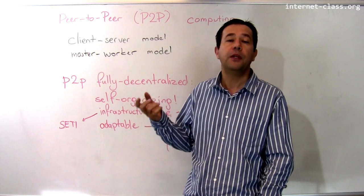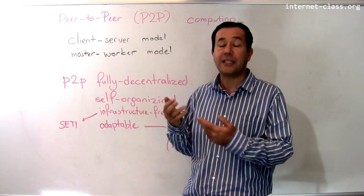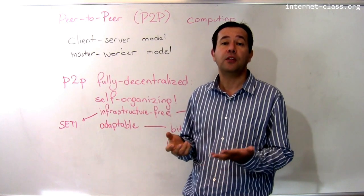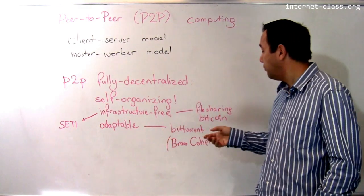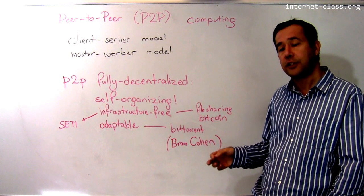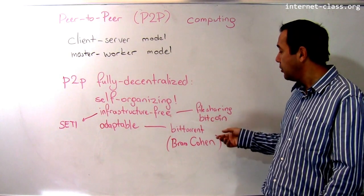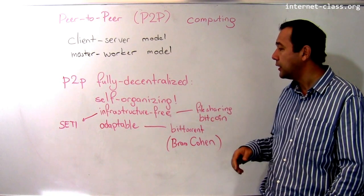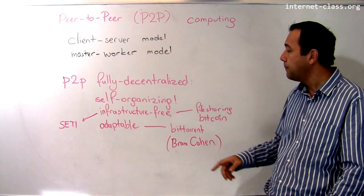Another one, very popular these days, is Bitcoin. It's a peer-to-peer digital currency mechanism—again, not to have a centralized organization behind it. Infrastructure-free is also good for voluntary computing, public resource computing.